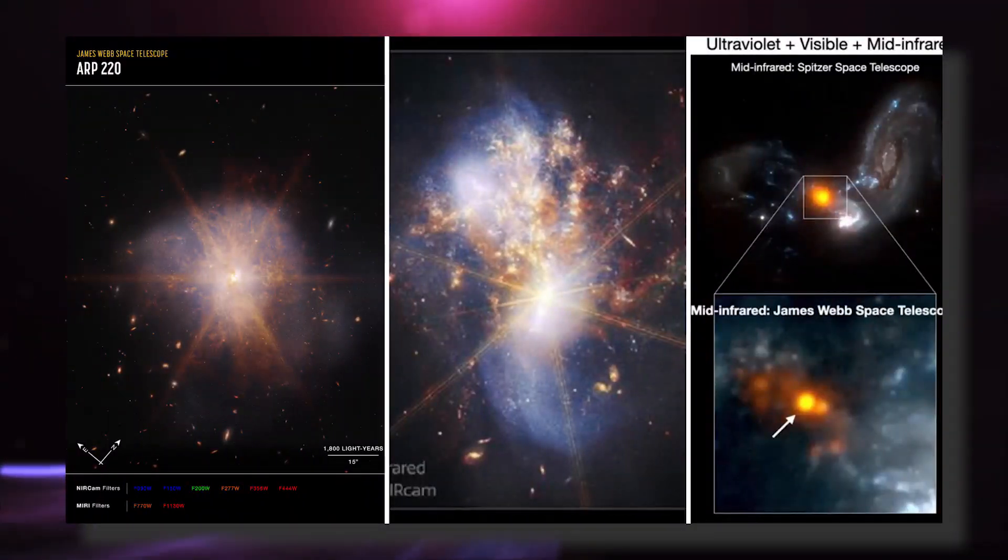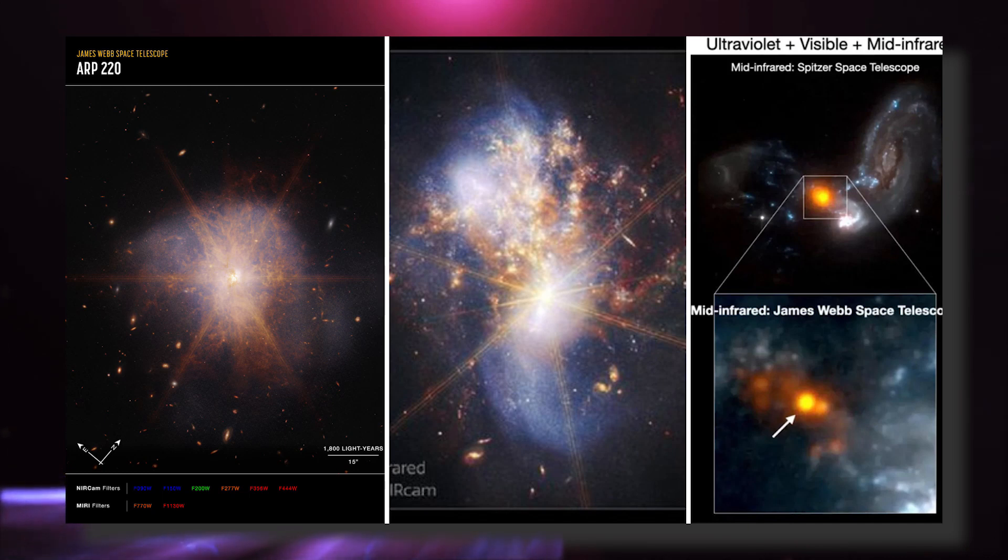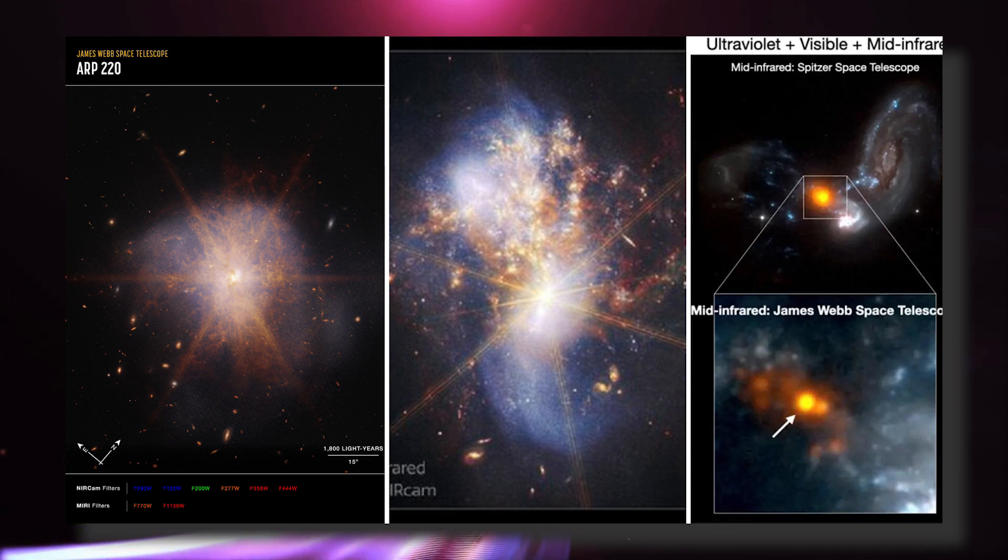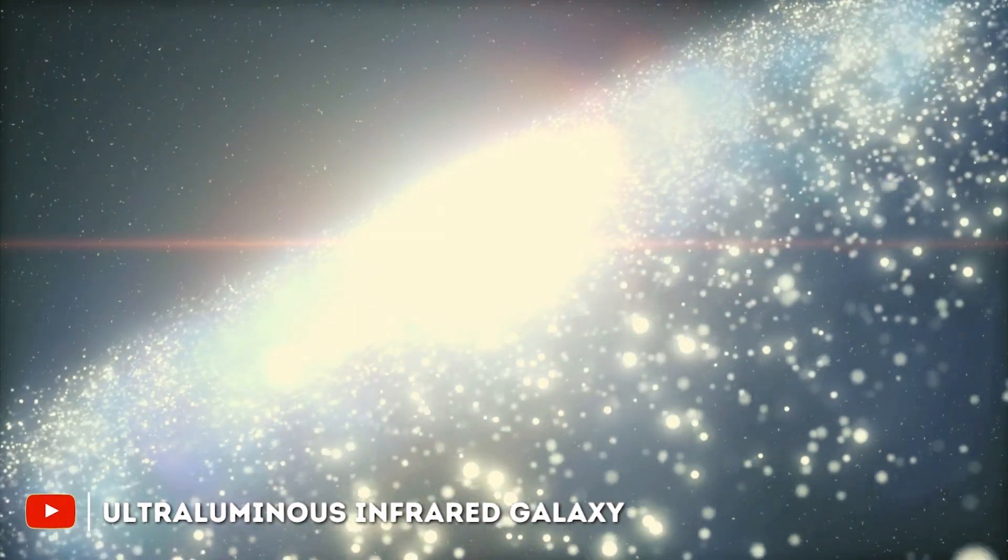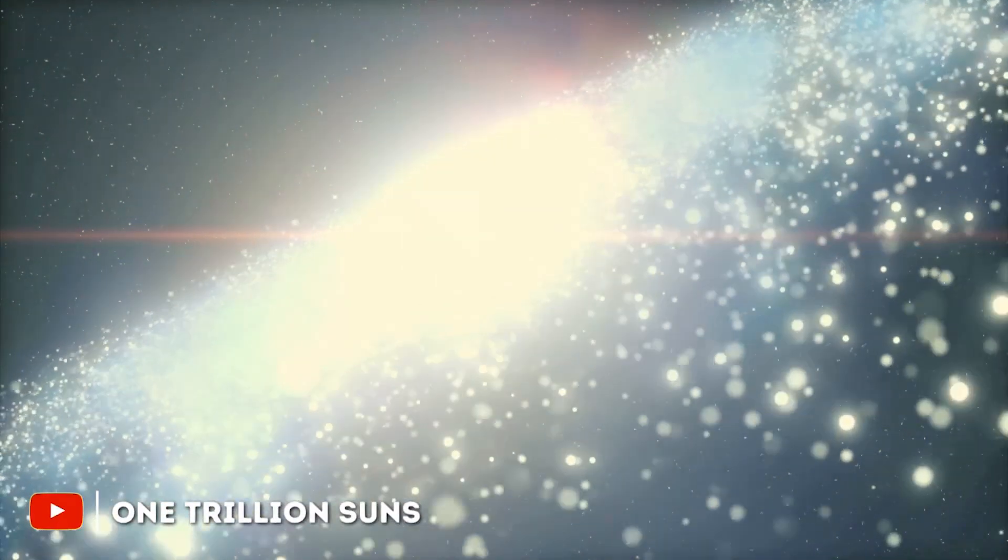When two spiral galaxies merge, the phenomenon known as ARP 220 shines brightest in the infrared, making it perfect for observation by the James Webb Space Telescope. It is classified as an ultra-luminous infrared galaxy with a luminosity of 1 trillion suns, compared to our own Milky Way galaxy, which has much lower luminosity, about 10 billion suns.